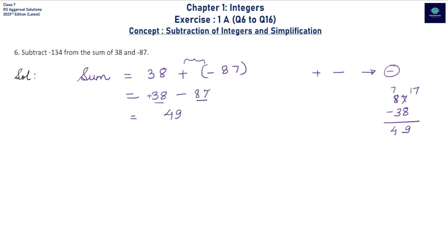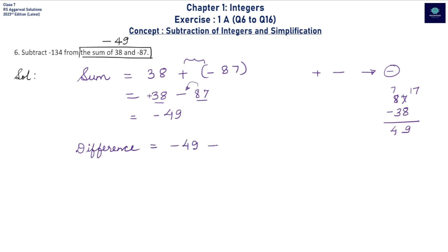Among 38 and 87, 87 is greater and carries the minus sign, so our answer is -49. Now re-reading the question: subtract -134 from -49. The difference = (-49) - (-134). Opening the bracket, minus and minus becomes plus, giving -49 + 134.